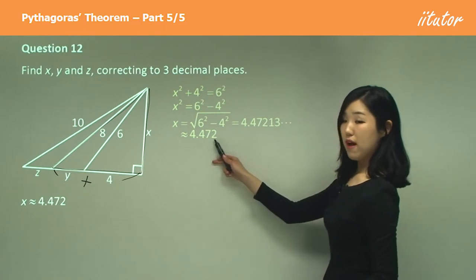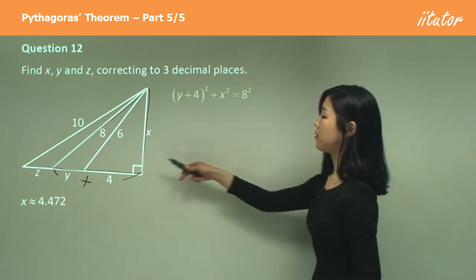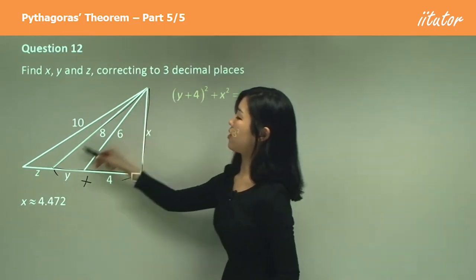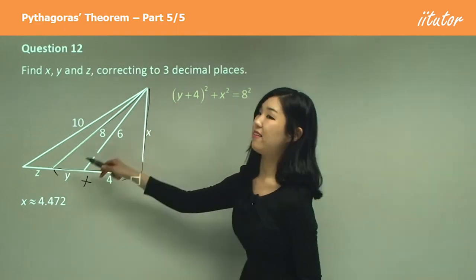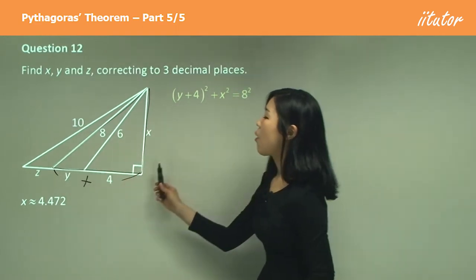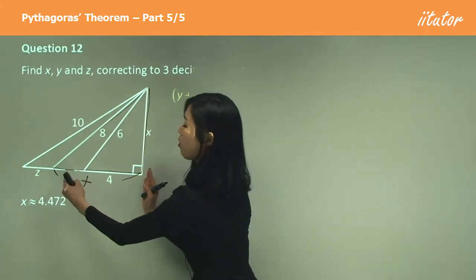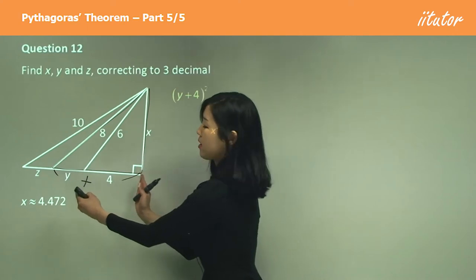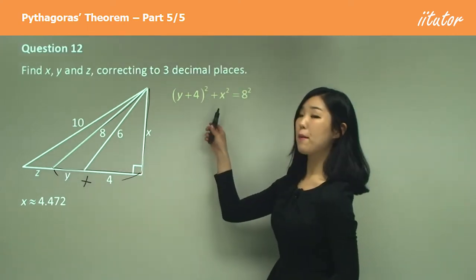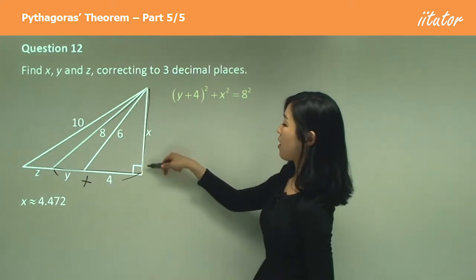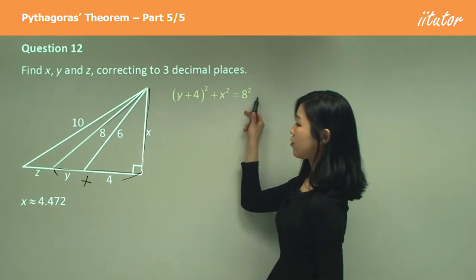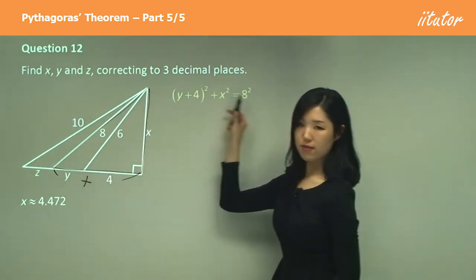I'm going to do the same thing. x is this, we found that. So if I apply for this bigger triangle here that I circle or outlined, it's going to be y plus 4 squared because not just y squared, it's the whole thing squared. So the whole side is y plus 4. So y plus 4 squared plus the other side x squared equals hypotenuse squared, so 8 squared.